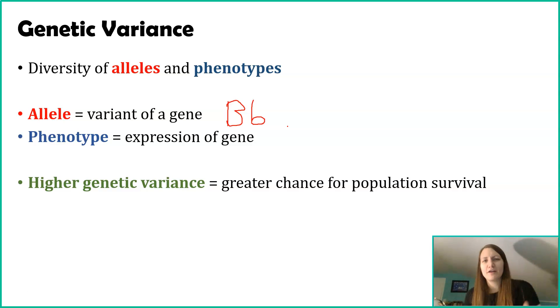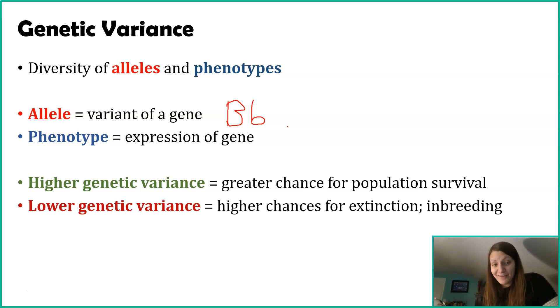If a new predator comes in, if the food supply changes, if weather conditions change, if there's a whole bunch of variation, that means that some individuals are likely to survive. They have some combination of traits that enable them to survive. But if your population is very similar to one another, similar to the potato famine in Ireland, if all of your potatoes are clones of one another, if something happens, if a disease comes through, if a parasite comes through, and they're all the same, you have a much higher likelihood of extinction.